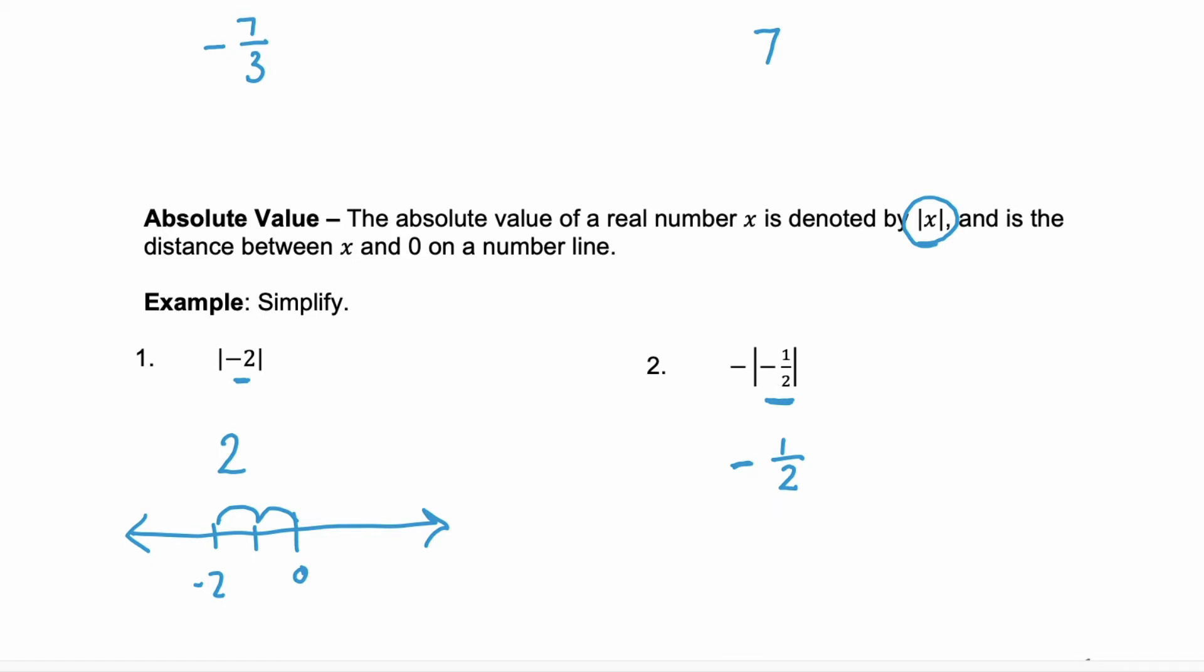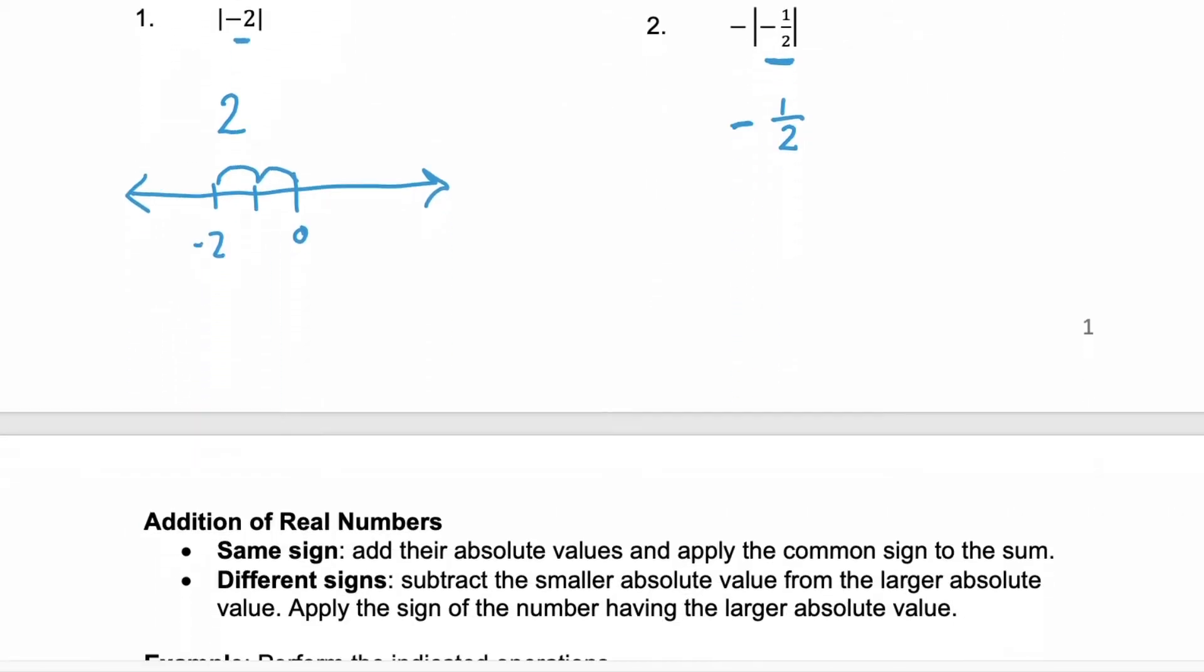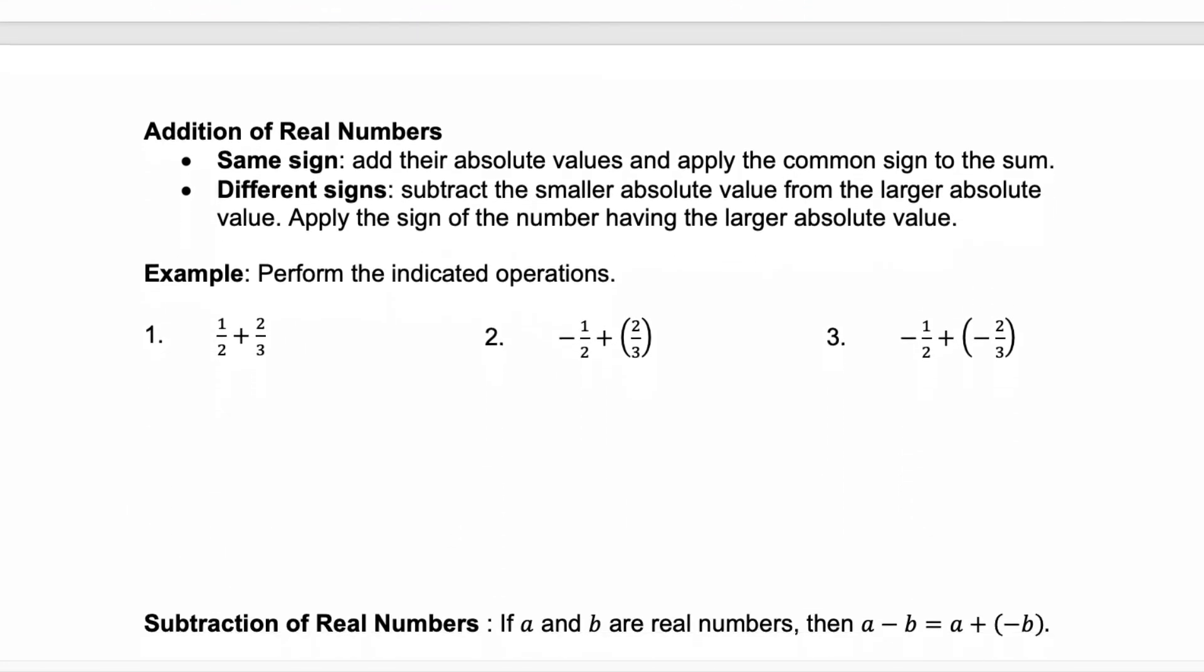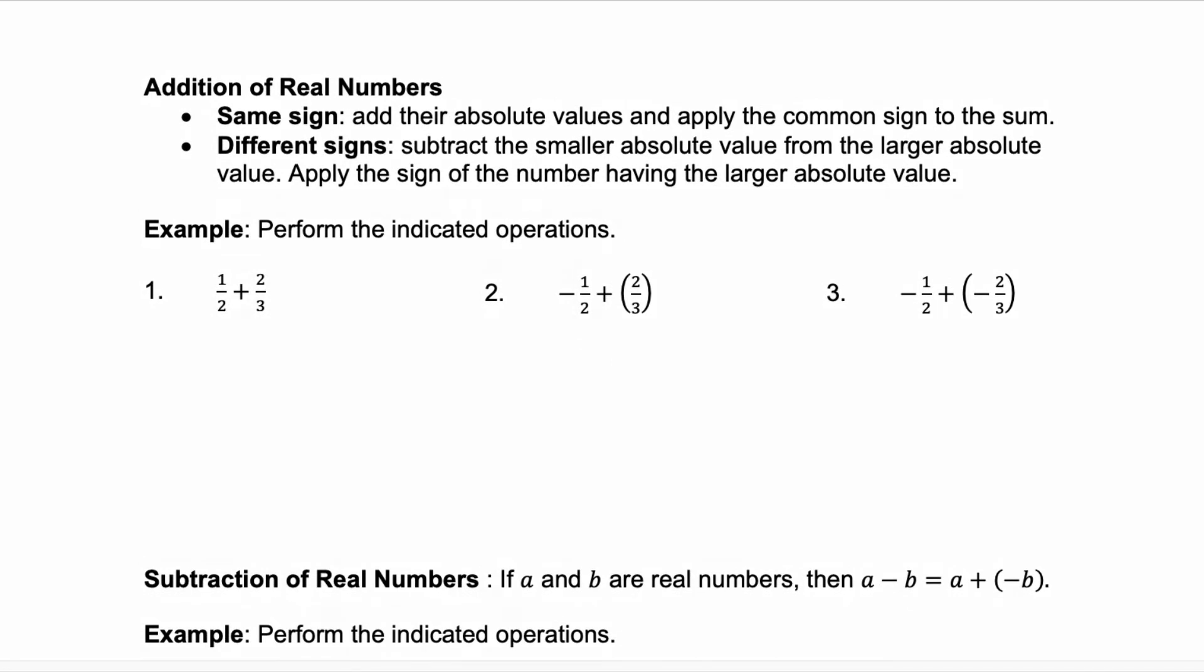Now let's use these rules to help us with the addition of real numbers. Remember when you're adding real numbers, if they have the same sign, you're going to add their absolute values and use that same sign on the sum. If they have different signs, you'll subtract the smaller absolute value from the larger absolute value and then apply the sign of the number with the larger absolute value.